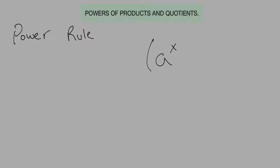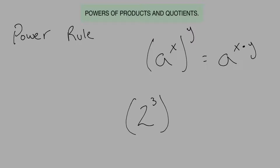The next rule is the power rule. That's if you have a to the x, and then you raise that again — you have an exponent, then you have another exponent — those get multiplied together. So this equals a to the x times y. For example, if you have two cubed, and all of that is raised to the fourth power, that equals two raised to the three times four, or two to the twelfth power. If you have something being raised and then it's being raised again, you multiply them out. That's your power rule.